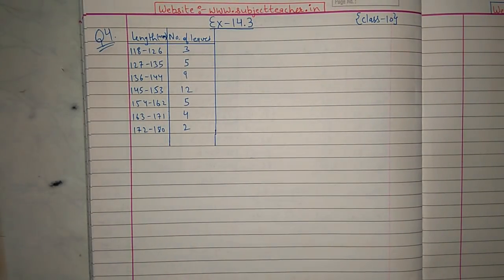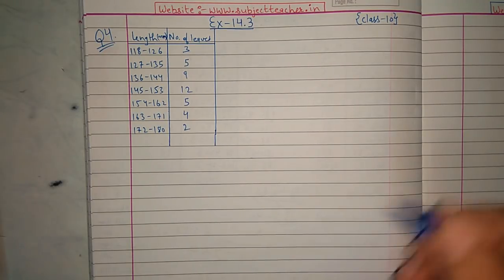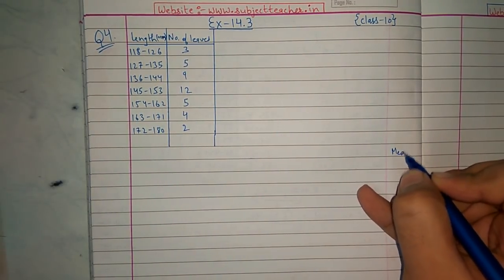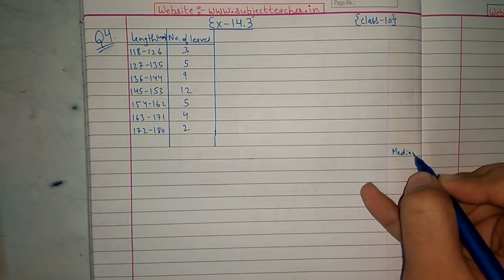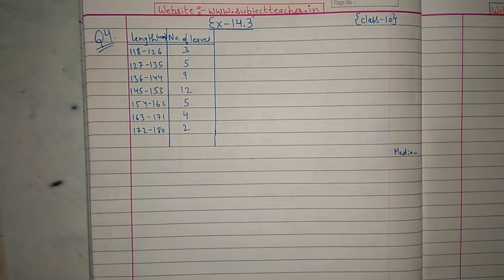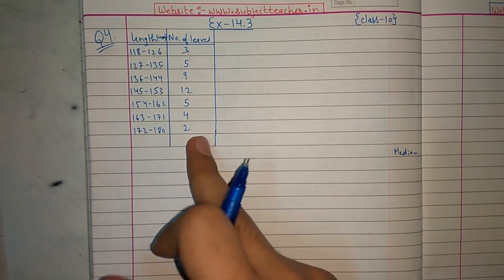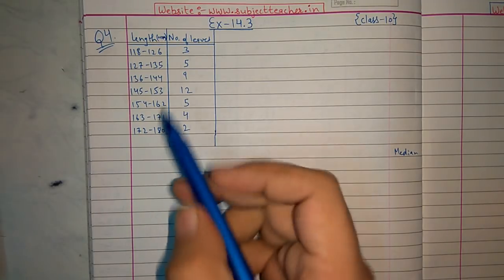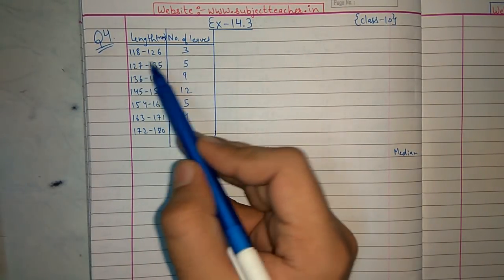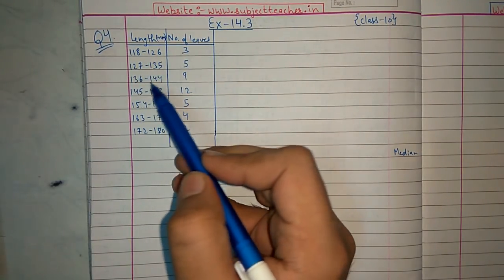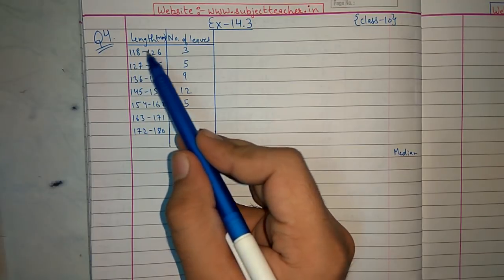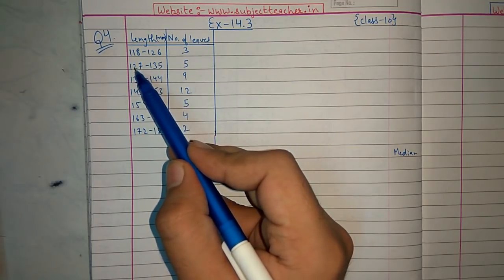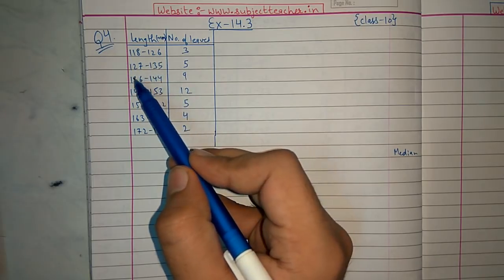We have to find the median length of the leaves. This is a median distribution table. We need to notice the class intervals — they are discrete right now, not continuous. The intervals are 118–126 and 126–135.